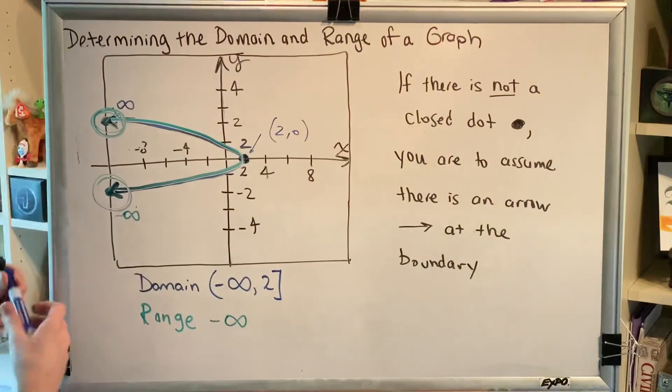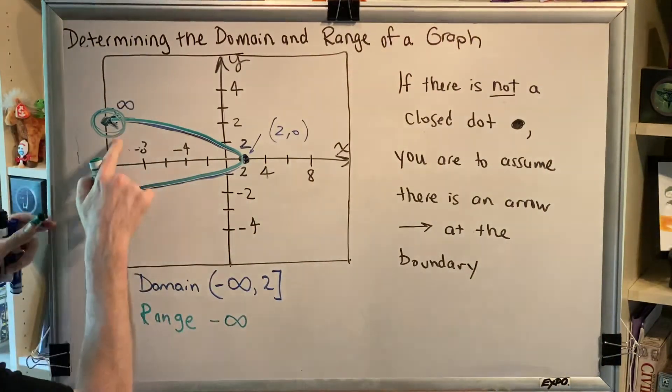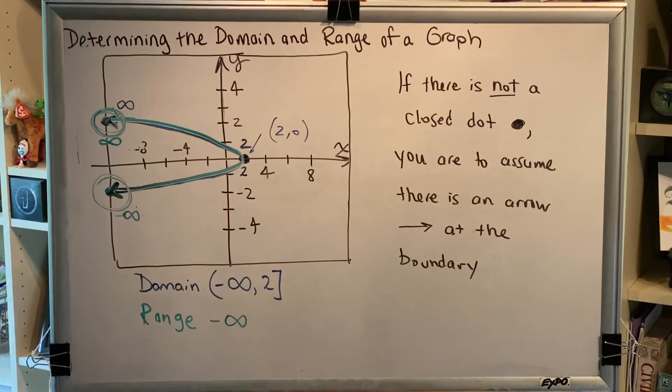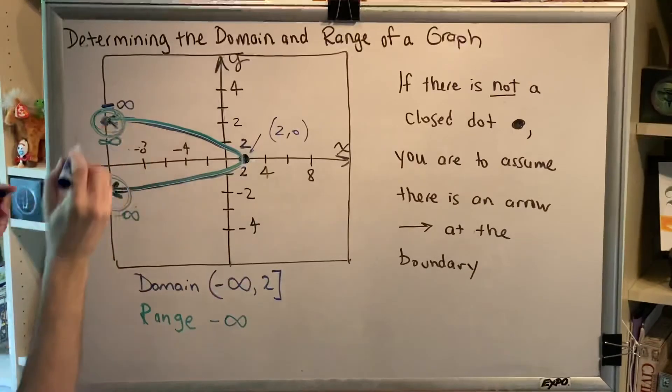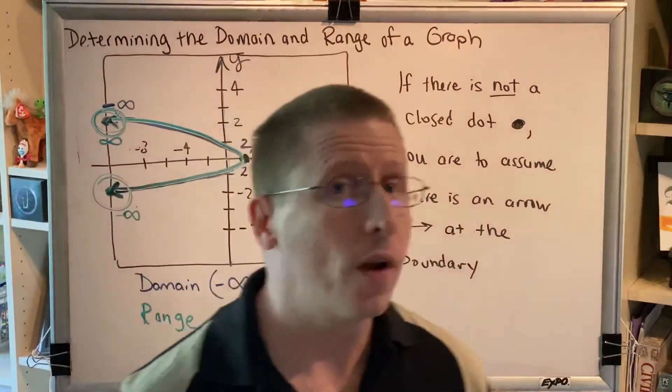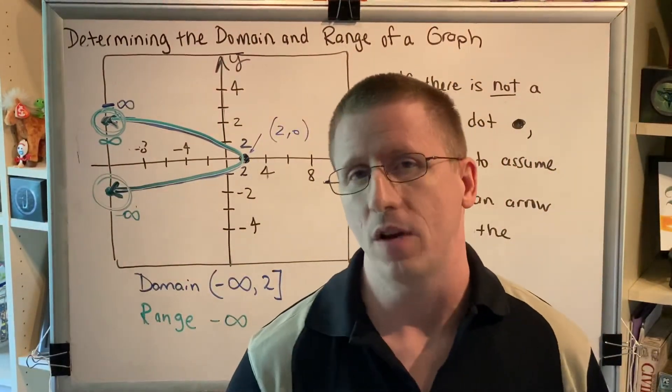So this right here is positive infinity for the range. It was negative infinity for domain, but it's positive infinity for the range. One arrow can represent two different things, two different flavors of infinity.